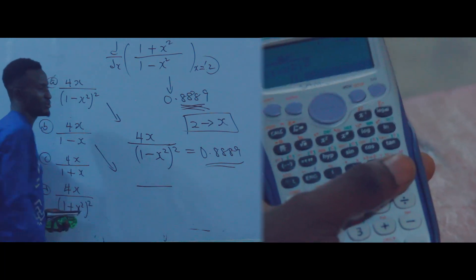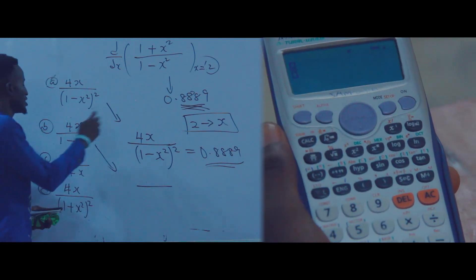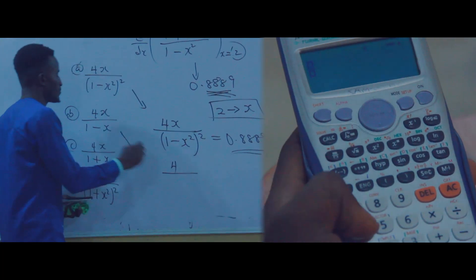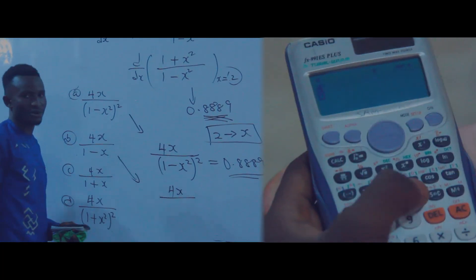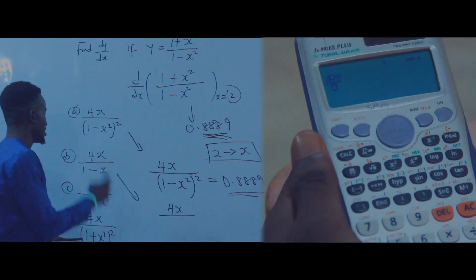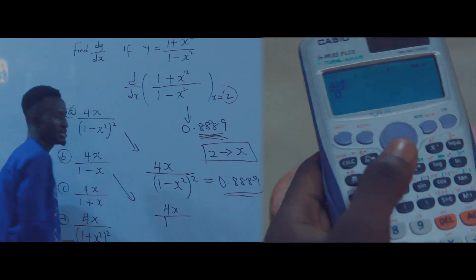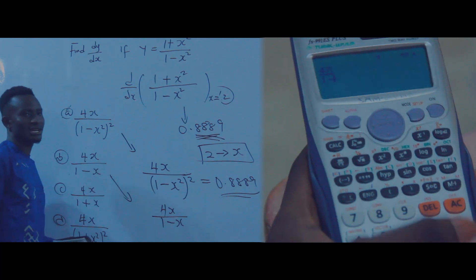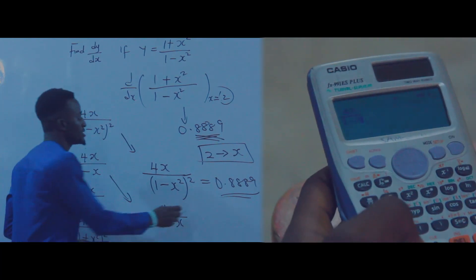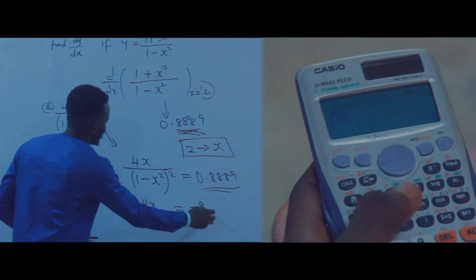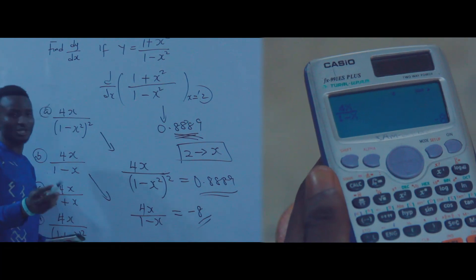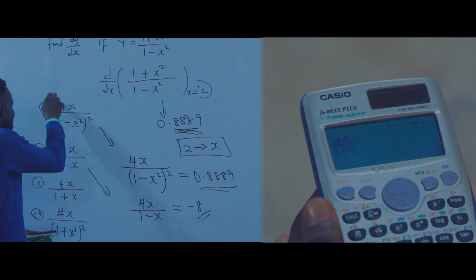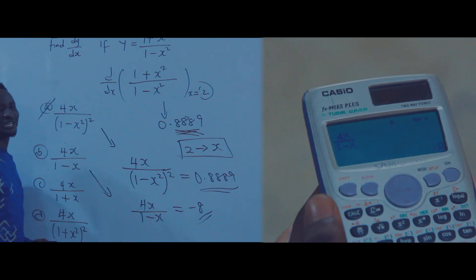For option B: press the fraction button, come to numerator and press 4, press alpha X, come to denominator, press 1, press minus, press alpha X, then press equals. The final answer for option B is minus 8 — that is not the same, so option B is wrong.